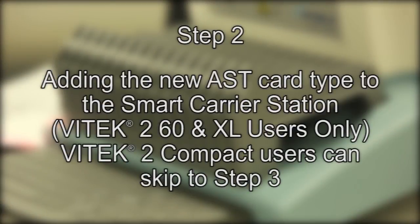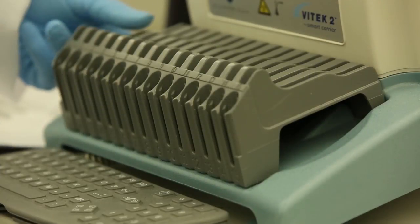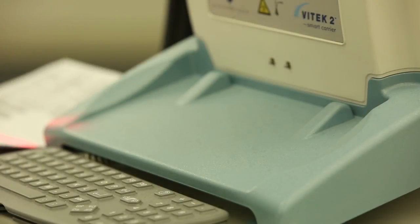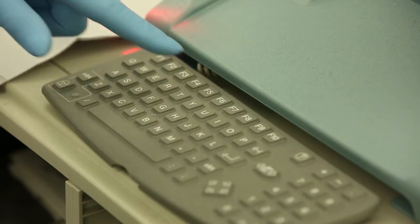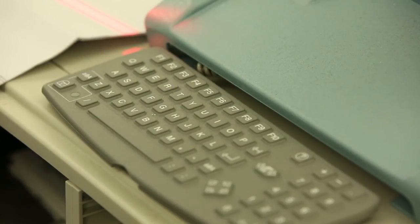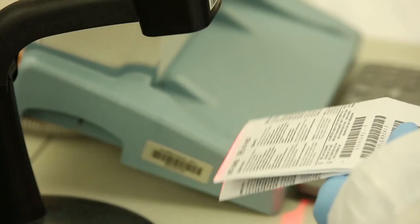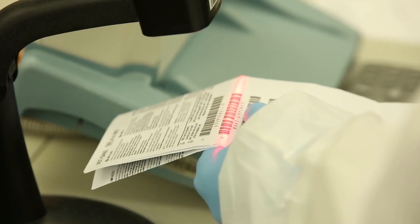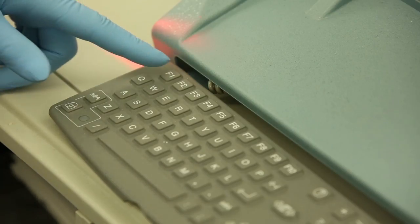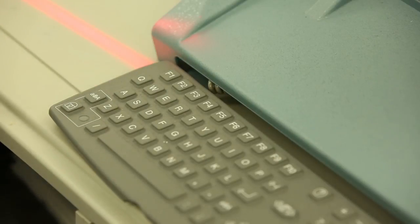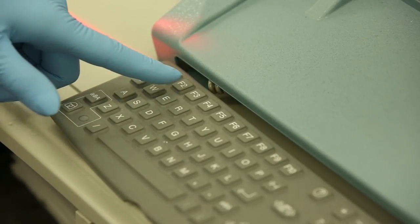Step 2: Adding the new AST card type to the Smart Carrier Station. Vitec-2 Compact users can skip to Step 3. Remove any cassettes from the Smart Carrier Station and press F6 on the SCS keypad. Scan in the first and second barcodes found on the back of the AST card package insert. Click F1 to save, then click F2 to exit.